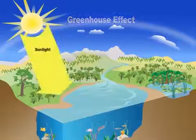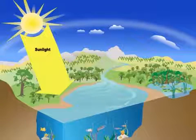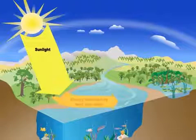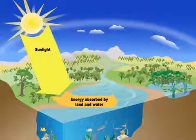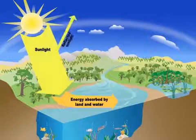It all starts with sunlight, which is a form of energy. Land and water absorb most of the sunlight that reaches the Earth. The rest is reflected back to space.